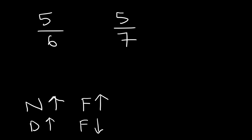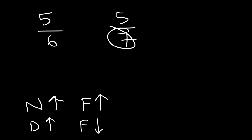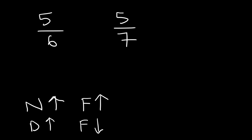So what this means is that if you have a fraction with a very large denominator, the decimal value will be very small. Now notice that 7 is greater than 6. Therefore, the fraction 5 over 7 will be less than 5 over 6. So 5 over 6 is greater than 5 over 7.